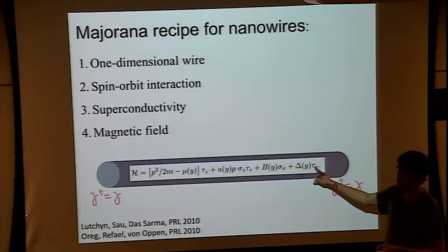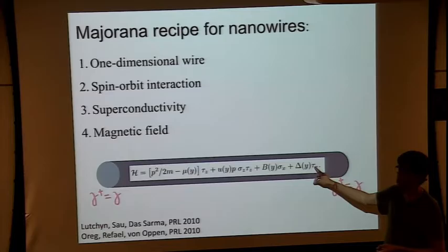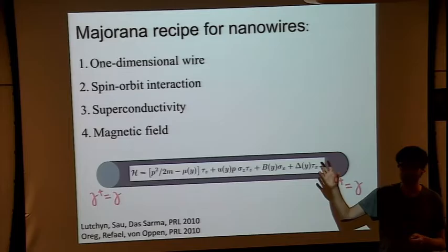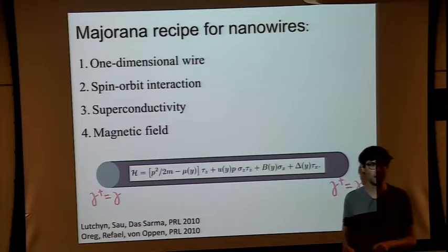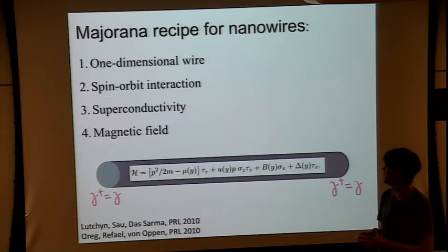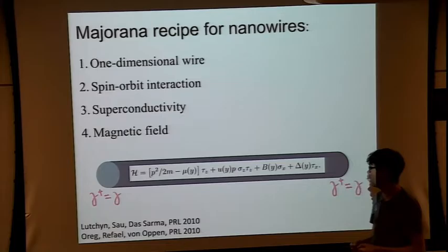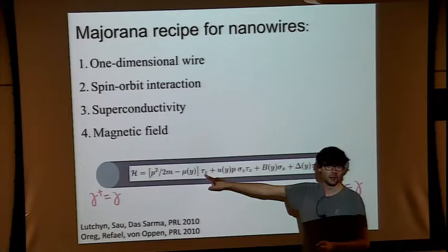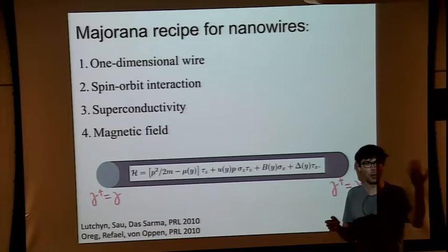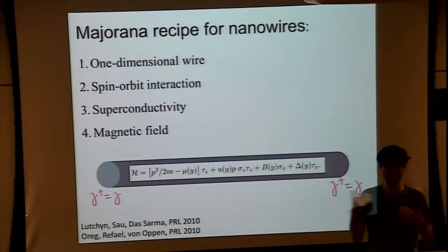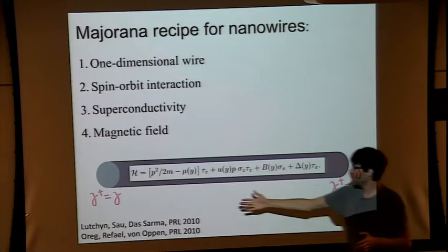Gallium arsenide has spin-orbit but it's a little weak. Then we have the Zeeman effect and superconductivity — in our case, induced superconductivity by proximity. Some induced correlation between spin-up and spin-down, and left- and right-movers in a nanowire, by proximity to an S-wave superconductor. The tau_z terms in the Hamiltonian represent particle-hole symmetry — the entire sigma space is doubled into the Nambu representation.